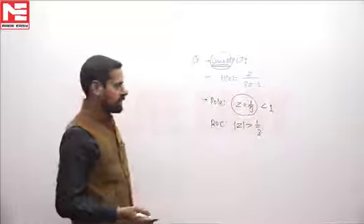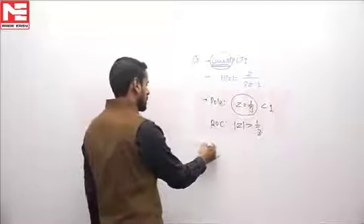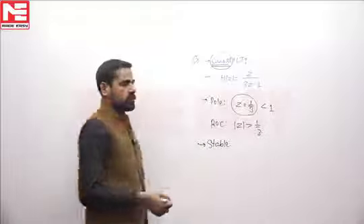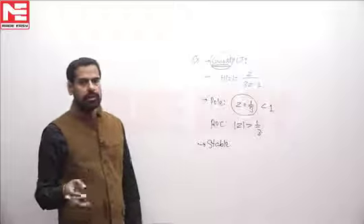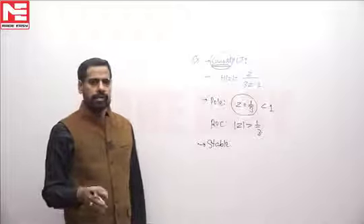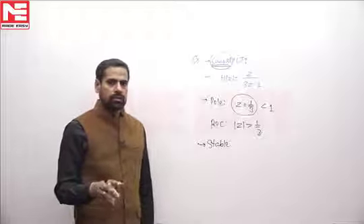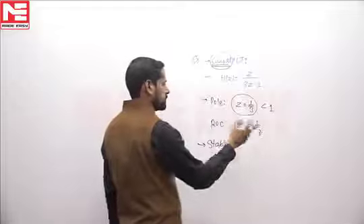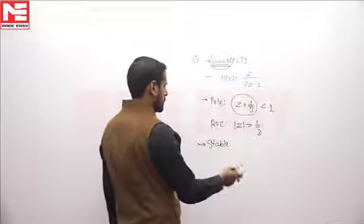The second method is we can check whether the unit circle is lying in ROC or not. If the unit circle lies in the ROC, then the nature of the system will be stable. And here according to this ROC, the unit circle is lying in the ROC, so the system will be stable.